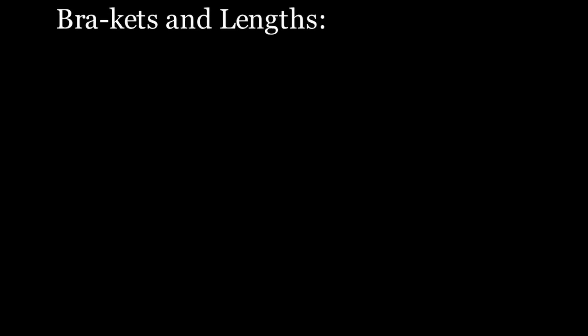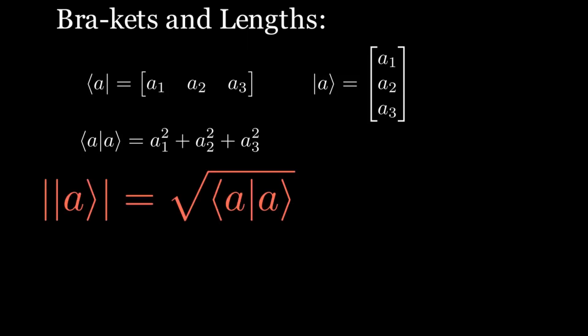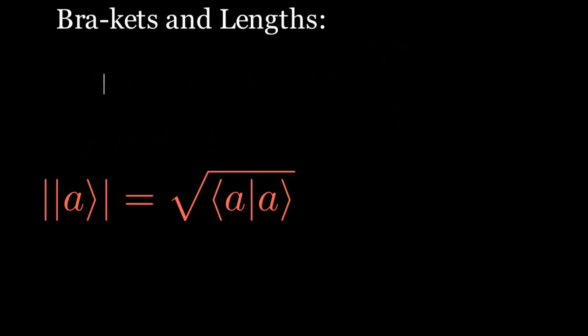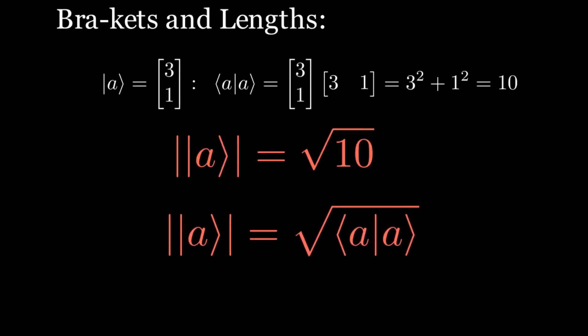Now let's revisit lengths using bracket notation. If we have ket a, the bra with the same name has exactly the same entries but arranged horizontally. Consequently, ⟨a|a⟩ equals a₁² + a₂² + … + aₙ², and so the length of ket a can be written as the square root of ⟨a|a⟩. To illustrate, we return to the example where the length of ket a equals the square root of 10.